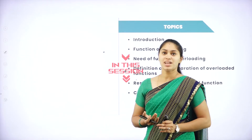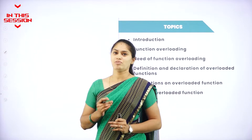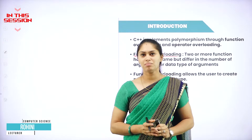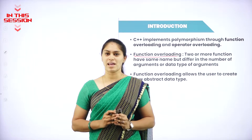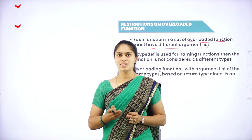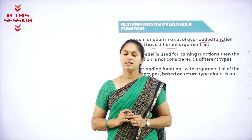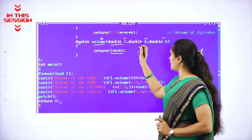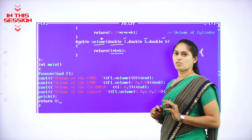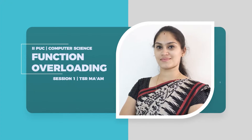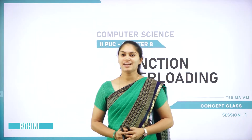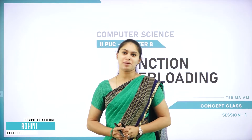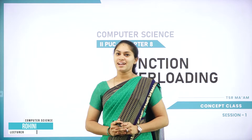An operator or function has the ability to take more than one form — that is nothing but polymorphism. Two or more functions have the same name but must differ in the number of parameters or data type of the parameter. Hello everybody, I welcome you all to the very interesting and easy chapter of your second PUC's computer science — that is function overloading.